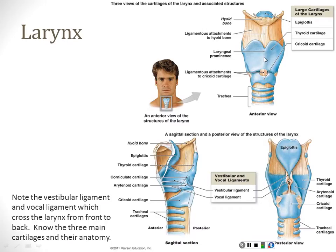Because there's an airway behind the laryngeal prominence, people really don't like having that area of their neck touched — it's because the body is trying to protect the airway. Next cartilage down is the cricoid cartilage, which you can palpate as a thick ring underneath the thyroid cartilage. It is the technical beginning of the trachea, which is a tube that goes down into the chest and eventually to the lungs. The thyroid cartilage, the cricoid cartilage, and the epiglottis are the three cartilages I want you to know.